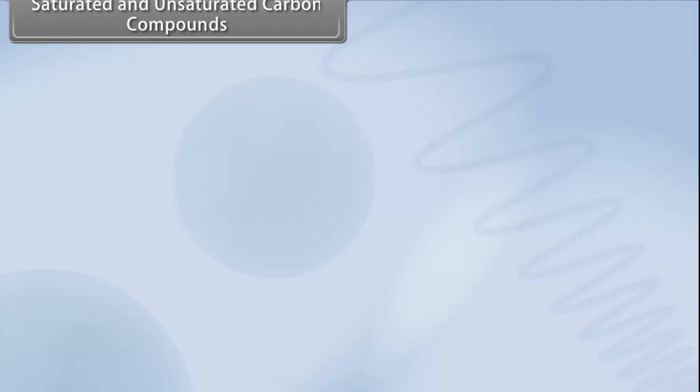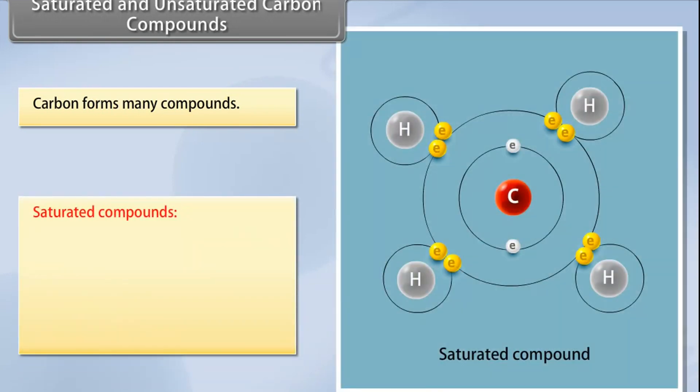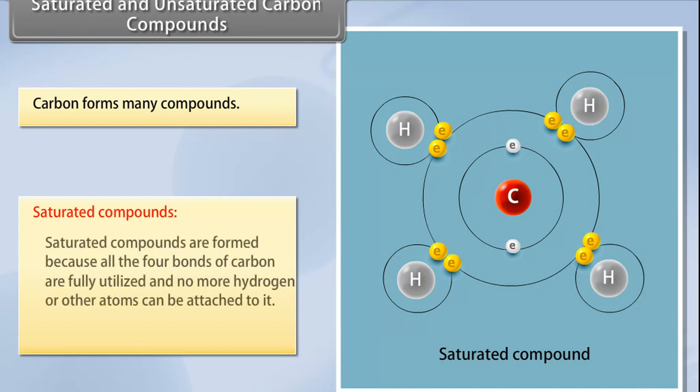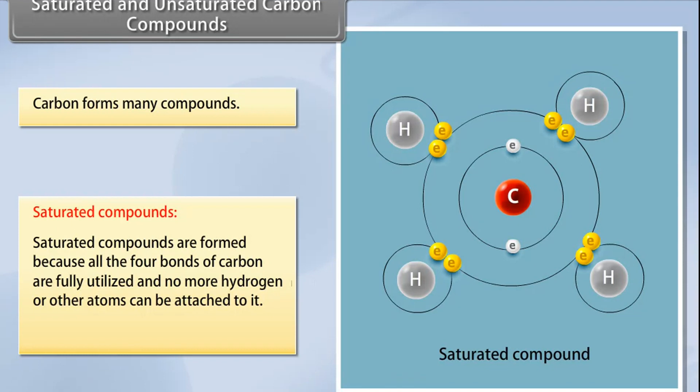Saturated and unsaturated carbon compounds. Saturated compounds: The carbon and hydrogen compounds where the adjacent carbon atoms contain only one single covalent bond are known as saturated hydrocarbons. The reason is because all the four bonds of carbon are fully utilized, and no more hydrogen or other atoms can be attached to it. These are known as alkanes.